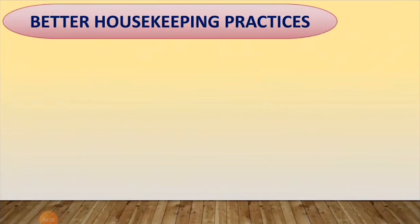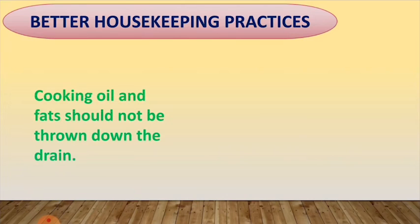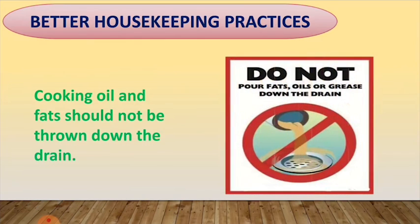Better housekeeping practices: one of the ways to minimize or eliminate waste and pollutants at their source is to see what you are releasing down the drain. Cooking oil and fats should not be thrown down the drain, as they can harden and block the pipes. In an open drain, fats block the soil pores, reducing its effectiveness in filtering water. We should throw oil and fats in the dustbin.